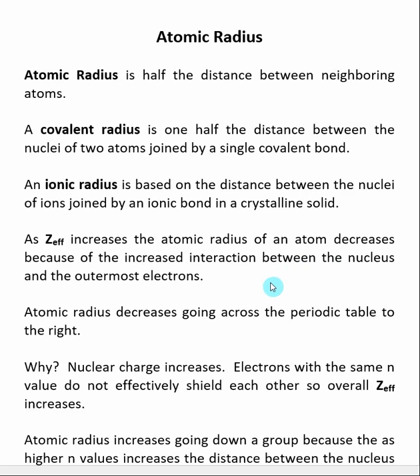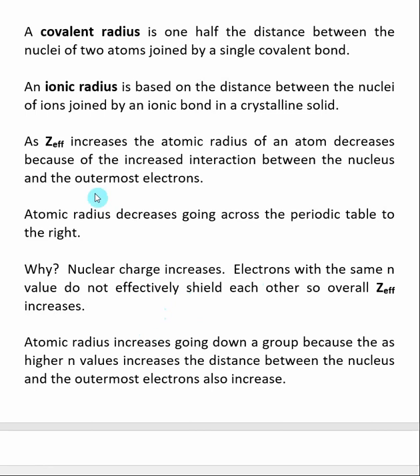We've already defined what the periodic trend is for Z-effective, but we're going to discuss atomic radius and the periodic trends in detail. Atomic radius decreases as we go across the periodic table. Just as with Z-effective, as we go from left to right, the nuclear charge increases and the electrons are going into the same energy level, so they do not shield each other, so Z-effective actually increases. As Z-effective increases, the atomic radius decreases.